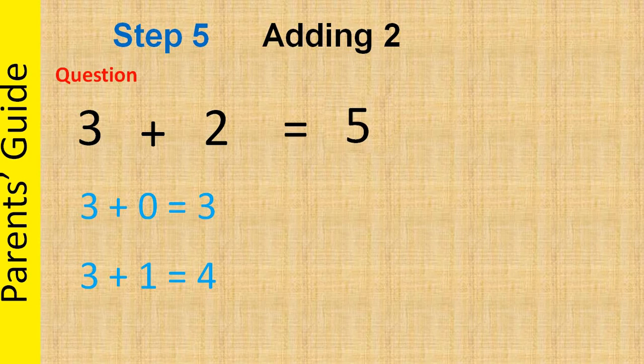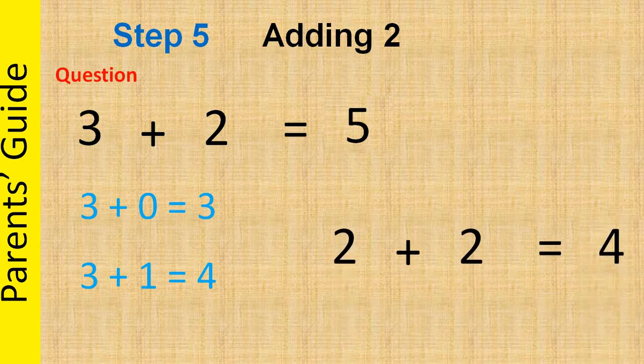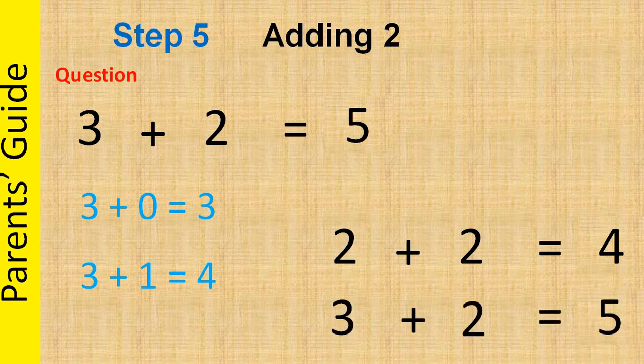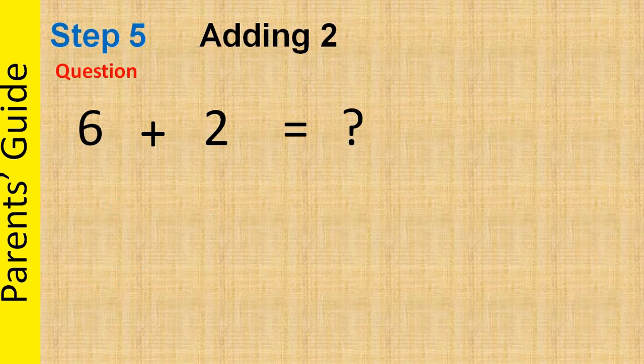The child might be able to do this faster because the child already knows 2 plus 2 is equal to 4 from the doubles in addition and might be able to say 3 plus 2 is equal to 5. Similarly, we can teach 6 plus 2, 7 plus 2, 8 plus 2, and so on.